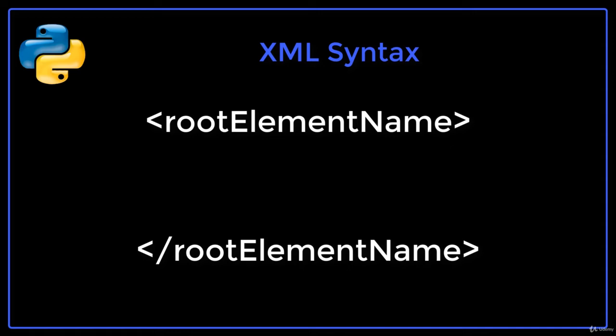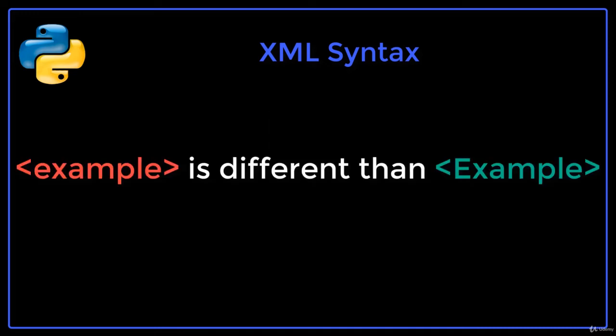If the forward slash is present in front of the tag name, then the tag is a closing tag. An element consists of an opening tag, the content, and the closing tag. Note that XML tags are case sensitive — capital and lowercase letters are considered different in tag names. For example, 'example' with a lowercase e is different from 'Example' with an uppercase e.